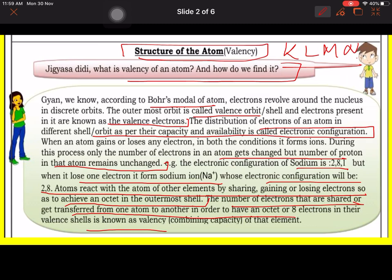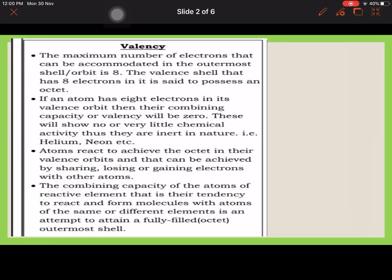If we understand this in very simple language, the number of electrons gained or lost by an element to acquire noble gas configuration is known as the valency. Because only the electrons are shared, not the protons.